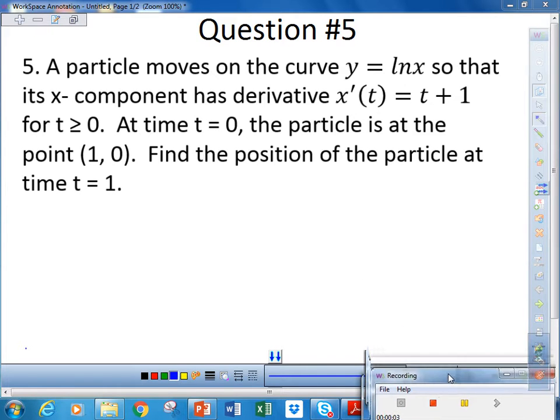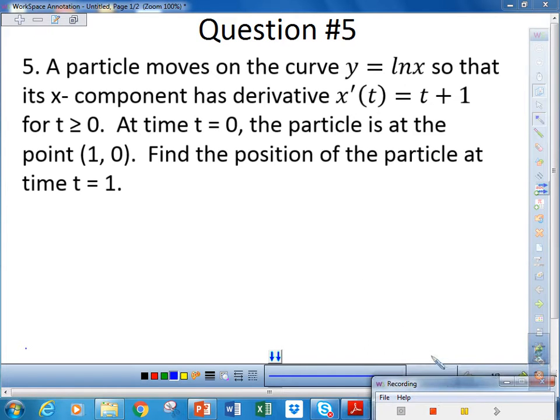Okay, so we're looking at question number 5, which is on page 4 of your notes. We're given that y is equal to the natural log of x, and we're given the derivative of x is t plus 1. And at time t equals 0, which is our initial condition, the point is at the coordinates 1, 0. Now, we have to remember that this is an x and this is a y-coordinate.